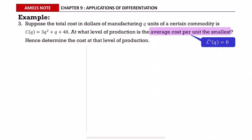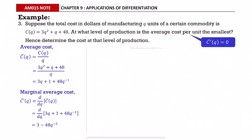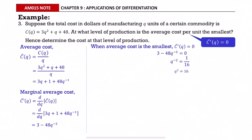First, find the average cost by dividing the cost function by q. Then find the marginal average cost by differentiating the average cost function. When the average cost is smallest, the marginal average cost equals zero — equate it to zero and solve for q. Since q is quantity it must always be positive, so q equals 4.